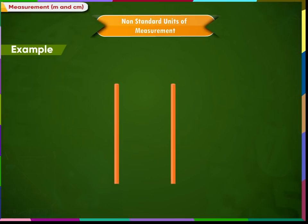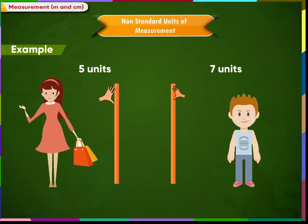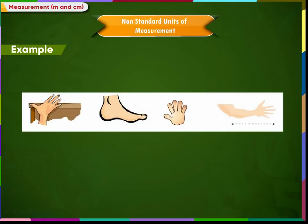For example, there are two sticks of the same length. Meena and Rahul measure the length using their hand span. Meena finds the length of her stick as 5 units, and Rahul finds the length of his stick as 7 units. These are two different lengths of the same stick. So, hand span, foot, and cubit are not standard units of measurement.